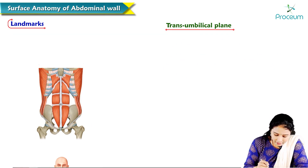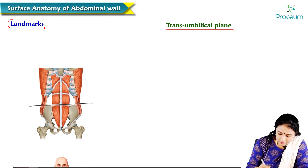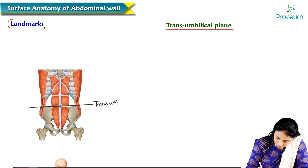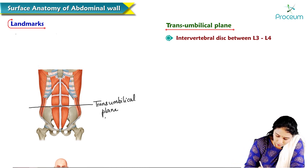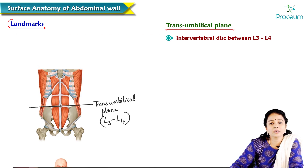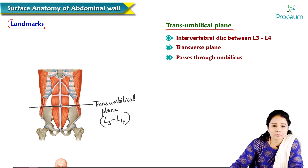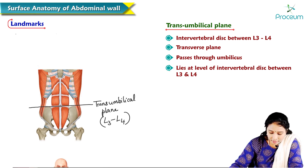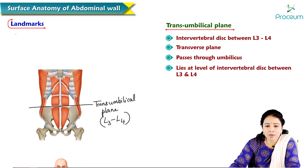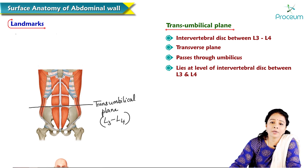The transumbilical plane, as the name suggests, is the plane crossing the umbilicus. It lies between L3 and L4, passing through the umbilicus at the level of the intervertebral disc between L3 and L4 in normal healthy individuals. However, this location can vary — particularly in individuals with a pendulous abdomen — and may not correspond to L3 and L4 vertebral levels.